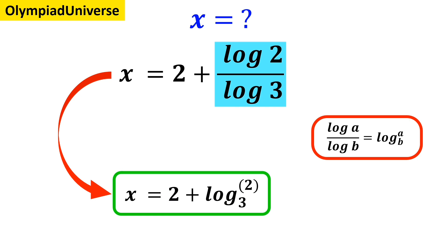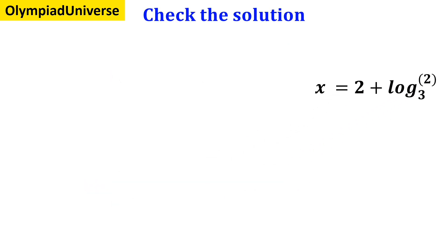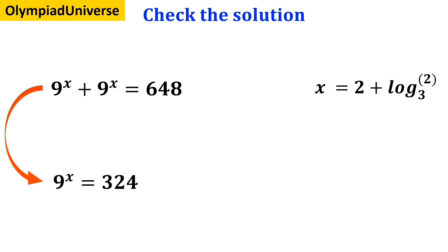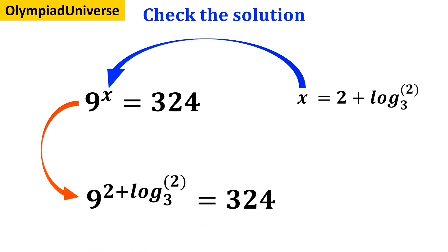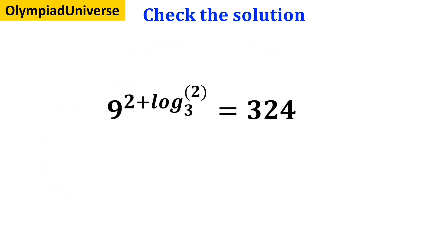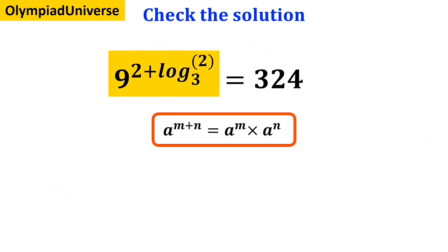Now let's check whether the value we found for x is actually correct or not. The original equation after simplification was 9 to the power of x equals 324. Now we substitute the value of x back into the equation, so it becomes 9 to the power of 2 plus log of 2 with base 3, which is equal to 324. According to the rules of exponent, a to the power of m plus n is equal to a to the power of m times a to the power of n.